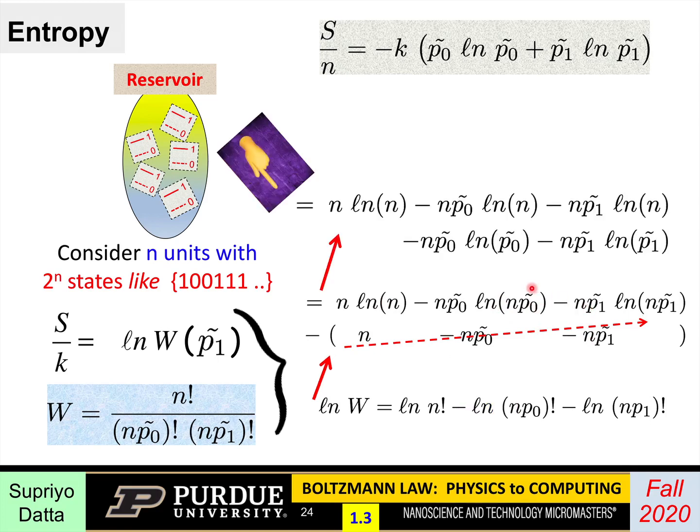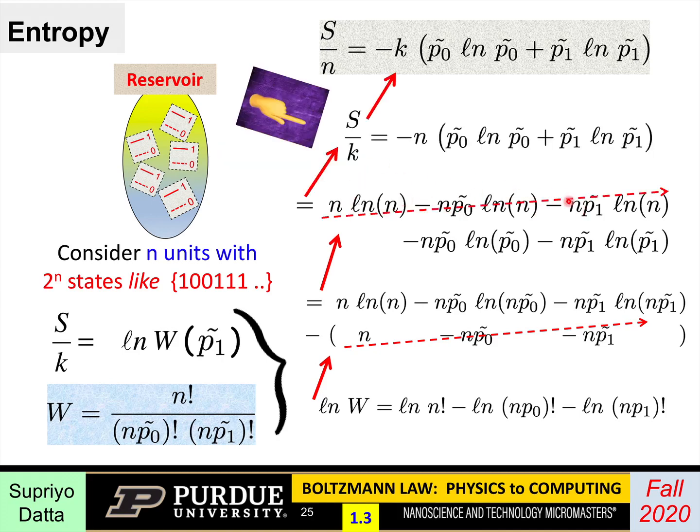Next, what we do is we expand it a little in the sense that when you have log np0, that's like log n plus log p0. Similarly, log of np1 is log n plus log p1. And so from here, we get this. We have broken up each of these two terms into these two each. So now we have five terms there. And here again, what I'd argue is that this top line cancels out because np0 plus np1 is equal to n. So everything in that top line cancels out. And so we are now left with just this, which is what I have written here.